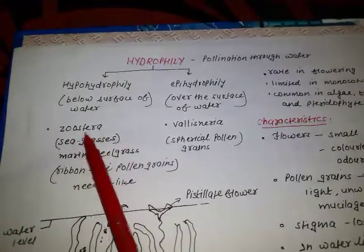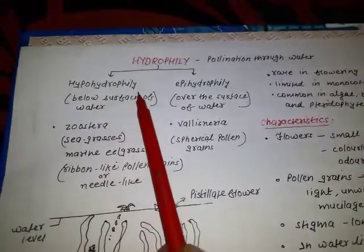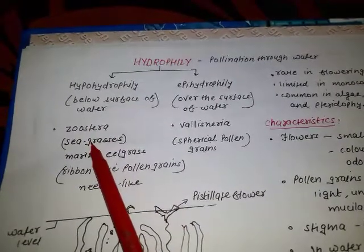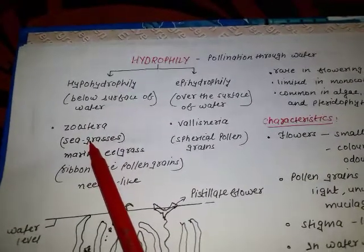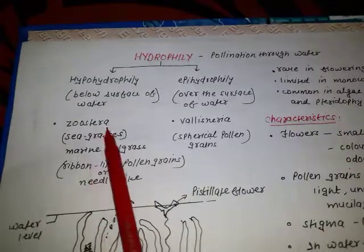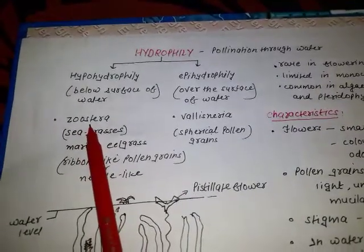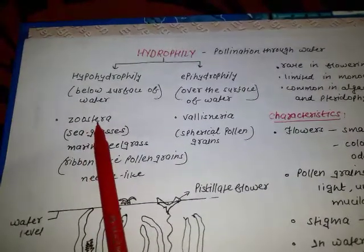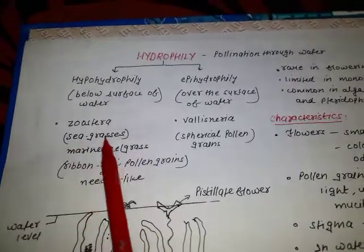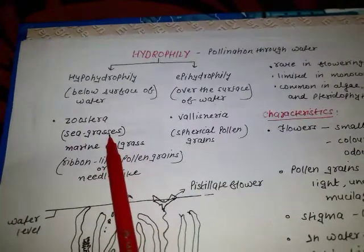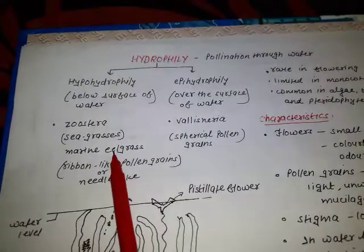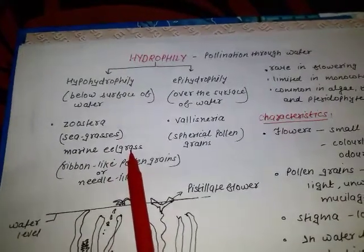For example, in Zostera, hypohydrophily takes place — the pollination occurs below the surface of the water. Zostera is a small genus of widely distributed sea grasses, commonly called marine eel grass.